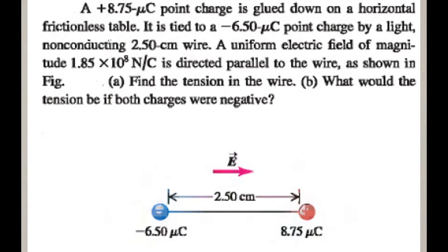An 8.75 microcoulomb point charge is laid down on a horizontal frictionless table. It is tied to a minus 6.5 microcoulomb point charge by a light non-conducting 2.5 cm wire. A uniform electric field of magnitude 1.85 × 10^8 Newton per Coulomb is directed parallel to the wire as shown in the figure. Part A: Find the tension in the wire. Part B: What would be the tension if both charges were negative?